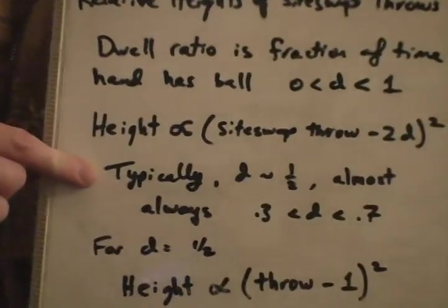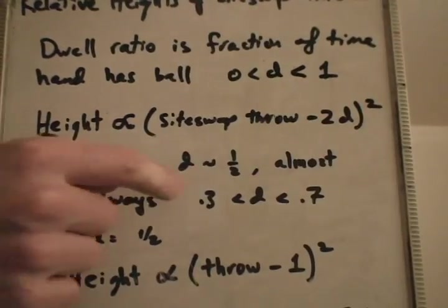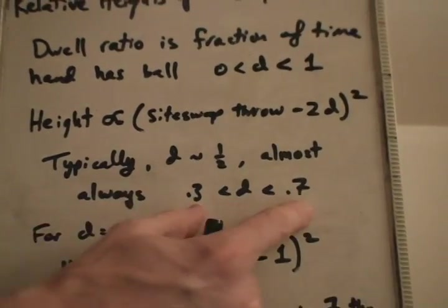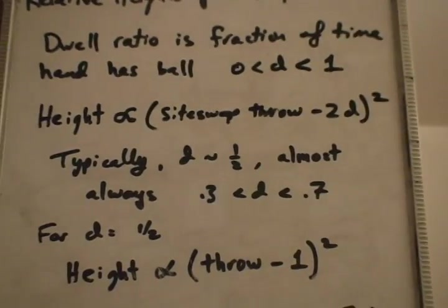Now, for most jugglers, typically the dwell ratio is right around a half, and actual measurements gave numbers between about 0.3 and 0.7.